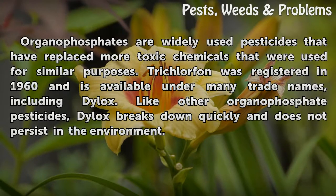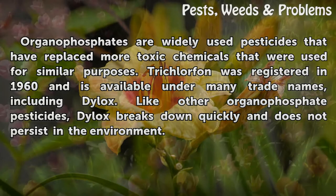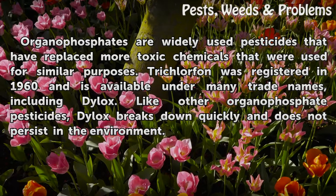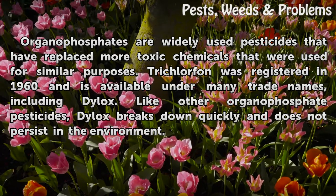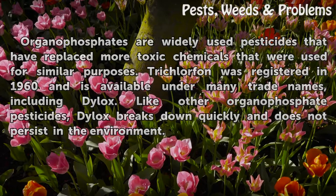Organophosphates are widely used pesticides that have replaced more toxic chemicals that were used for similar purposes. Trichlorphan was registered in 1960 and is available under many trade names, including Dilox. Like other organophosphate pesticides, Dilox breaks down quickly and does not persist in the environment.